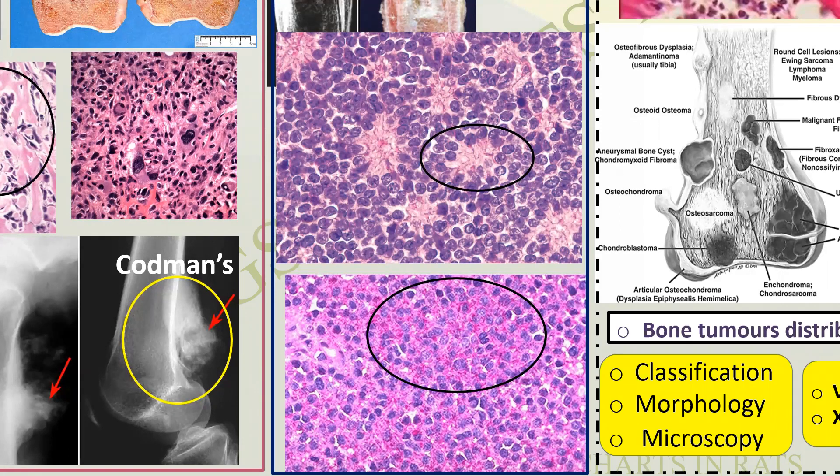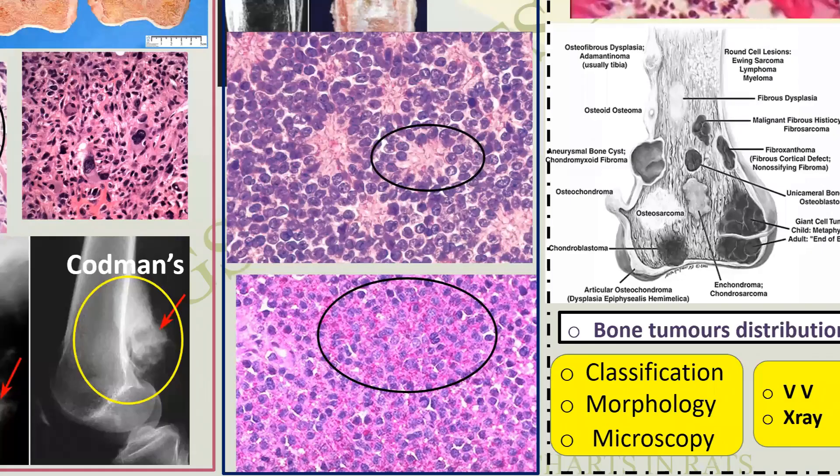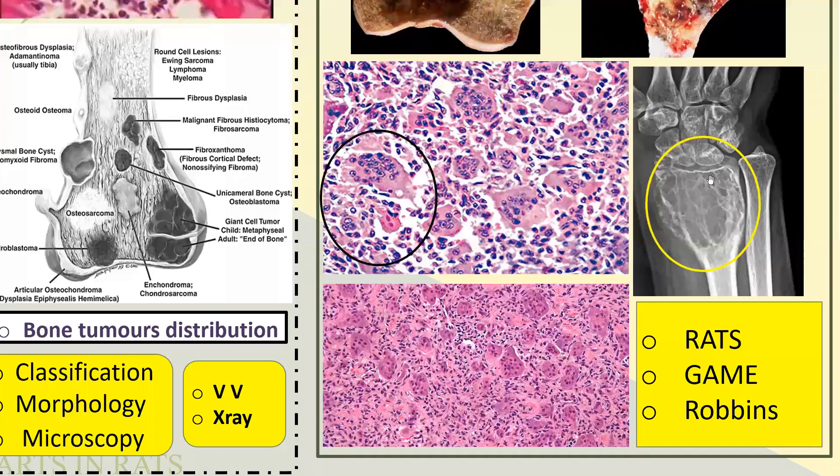Incidentally, there is a soap bubble appearance associated with the giant cell tumor.